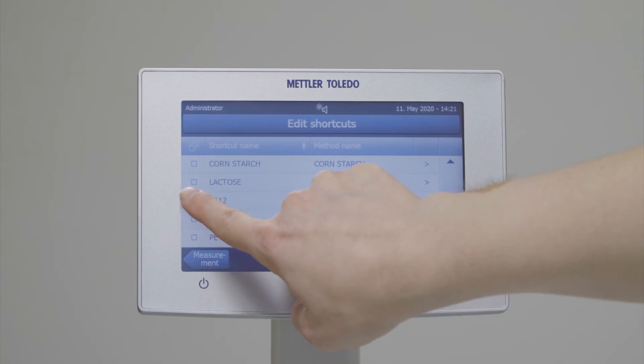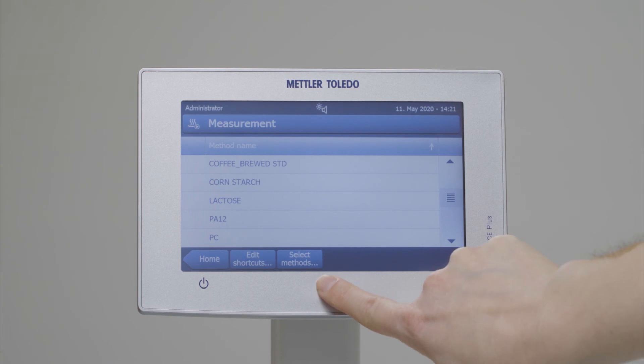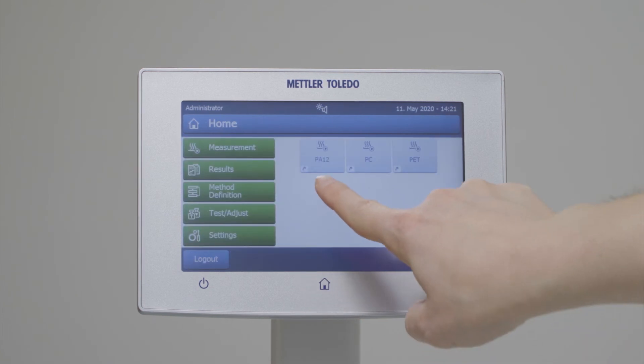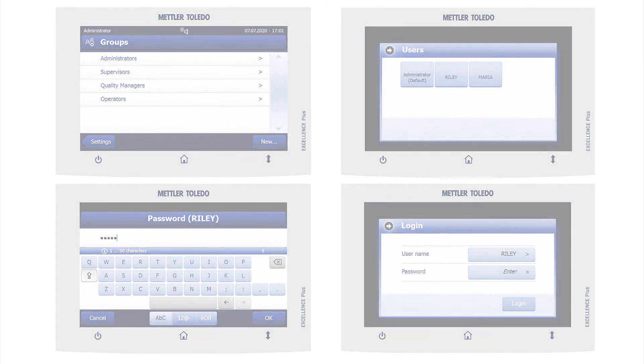Compared to a chemical analysis of the moisture content, a moisture analyzer is easy to use even by less specialized workers. Features such as method shortcuts on the home screen, customizable user groups and password protection make the process easier and safer.